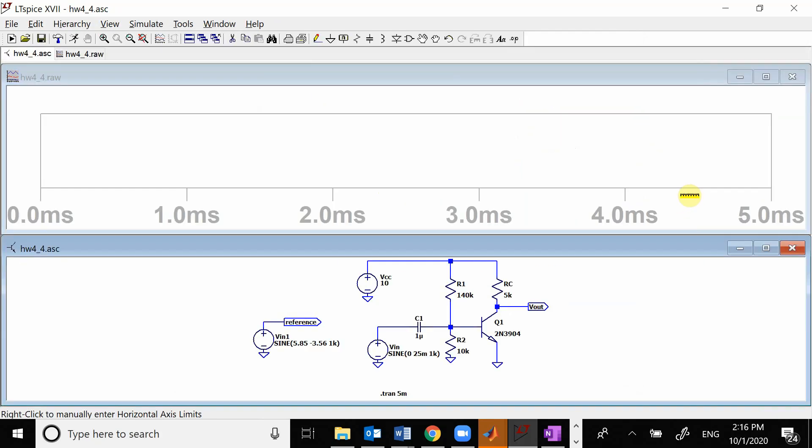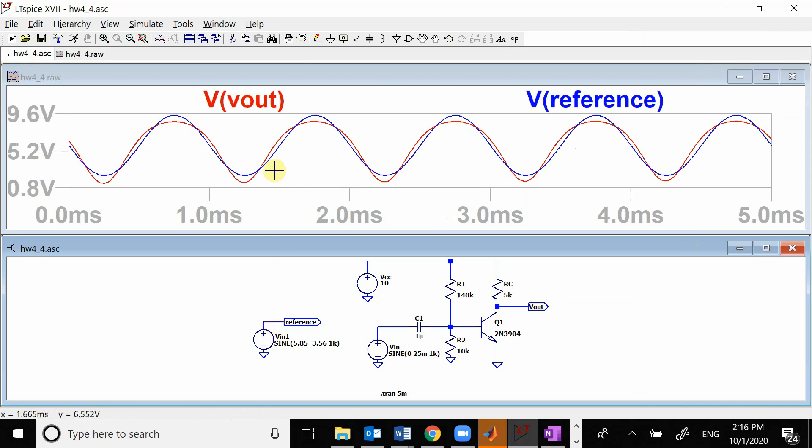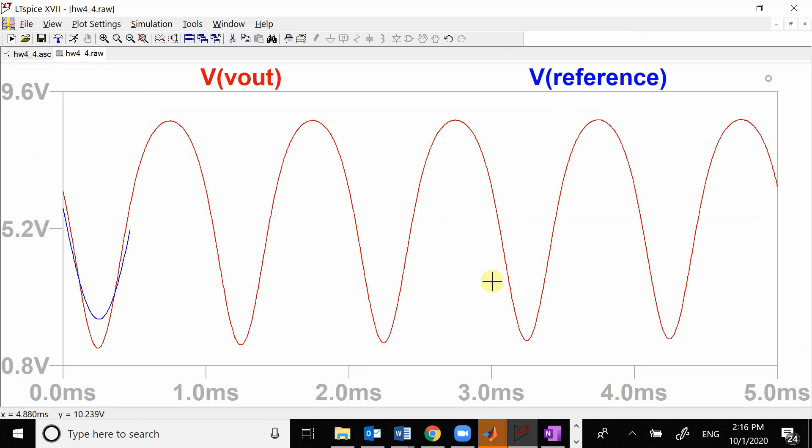So if we run this you see now our signal is bigger and if I look at my reference signal you see they look a little different. So the red one which is our output looks skinnier down here and a little bit flatter on there. So it's not quite as sinusoidal.